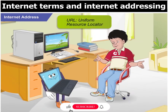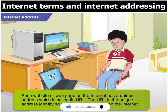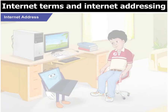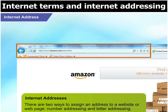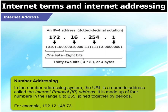And what is a URL? Each website or web page on the internet has a unique address which is called its URL. The URL is the unique address identifying a web page or website on the internet. There are two ways to assign an address: number addressing and letter addressing. In the number addressing system, the URL is a numeric address called the internet protocol or IP address.